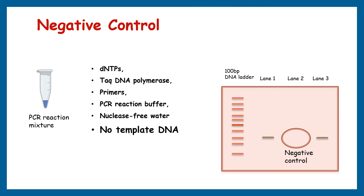The negative control tube includes Taq DNA polymerase, forward and reverse primers, PCR buffer, nuclease-free water, and PCR enhancers if required — but it lacks template DNA. This is often known as the negative amplification control or no-template control. Instead of template DNA, we add nuclease-free water into the PCR mixture. The final results should show no amplification in the negative control lane, confirming that none of the reagents have been contaminated.